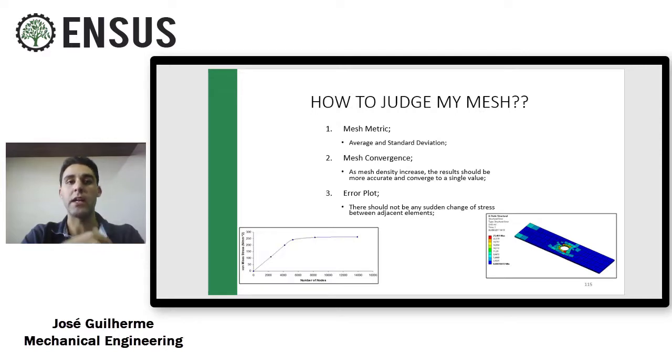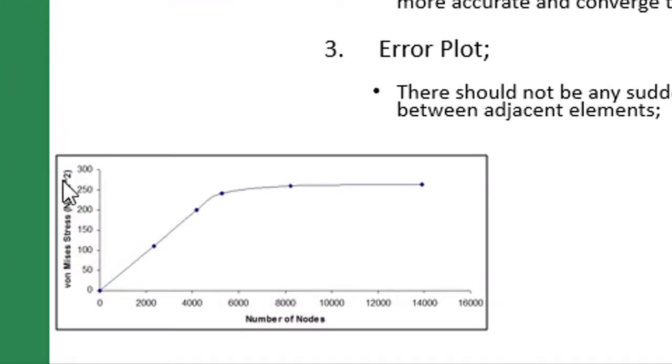I solve again and then plot a graphic where I show the stresses - the result of stresses that I have in the analysis versus the number of nodes. So I increase my mesh density to have a graphic like that, and the mesh convergence is where I converge to a single value.